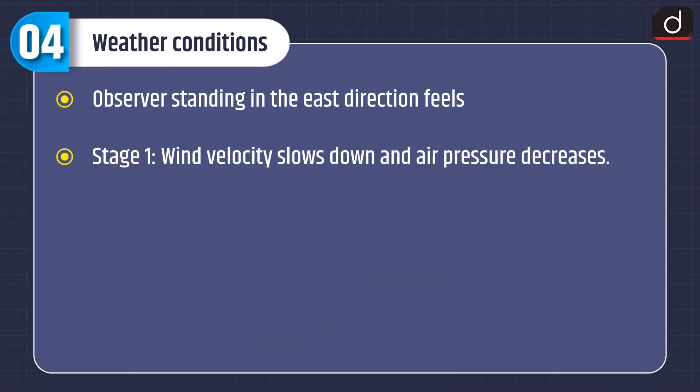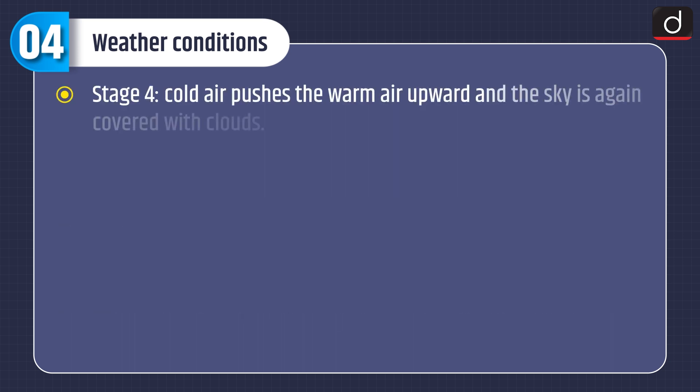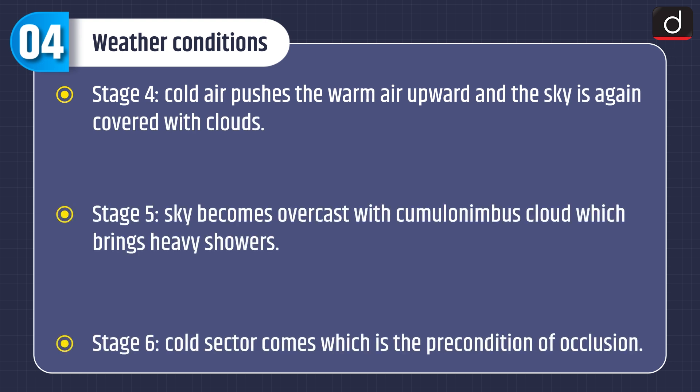Now let's discuss about the weather conditions. An observer standing in the east direction feels: Stage one — wind velocity slows down and air pressure decreases. Stage two — clouds become very thick and dark with the arrival of the cyclone and heavy showers begin with Nimbostratus clouds. Stage three — the warm sector comes over after the warm front passes, and the sky becomes cloudless and clear. Stage four — cold air pushes the warm air upward and the sky is again covered with clouds. Stage five — the sky becomes overcast with cumulonimbus clouds which bring heavy showers. Stage six — the cold sector comes, which is the pre-condition of occlusion.